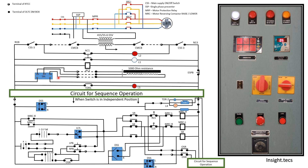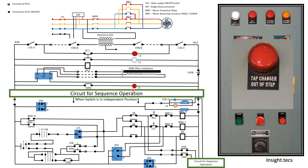Next is the tap changer out-of-step LED, L3. Whenever you are changing the tap position and the process is in between — whenever the tap position is not completely changed — at that point the L3 LED will glow. It glows using the contact of TDR1. We will learn in more detail about TDR1 later.